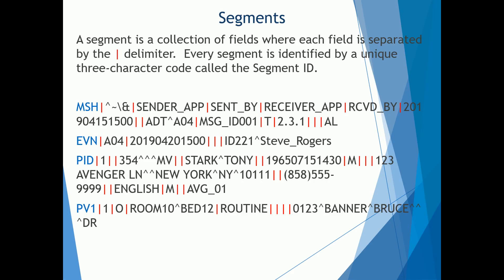Each segment is identified by a unique three-character code called the segment ID. So we have these segment IDs: MSH, EVN, PID, PV1.